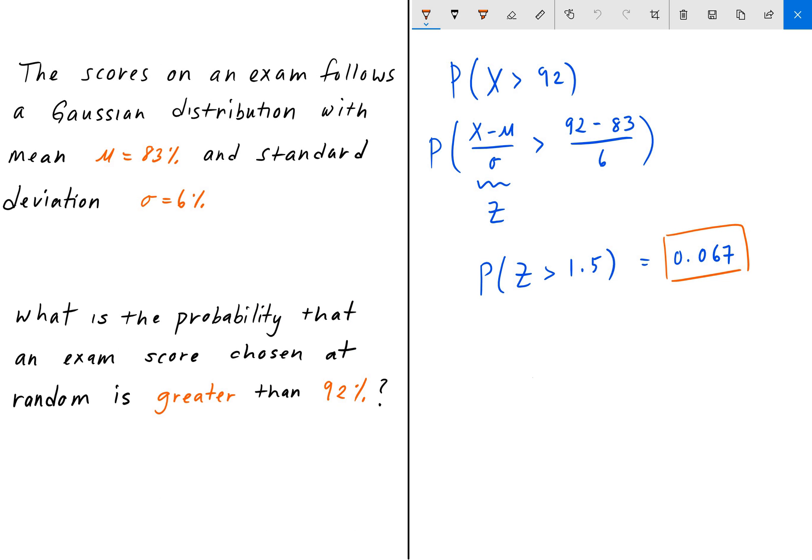So there you have it, that's the answer to this problem. If we were to choose one of these test scores randomly, the probability that we would choose a 92 is about seven percent, given that the mean of this Gaussian distribution is 83 percent and follows a standard deviation of six percent.